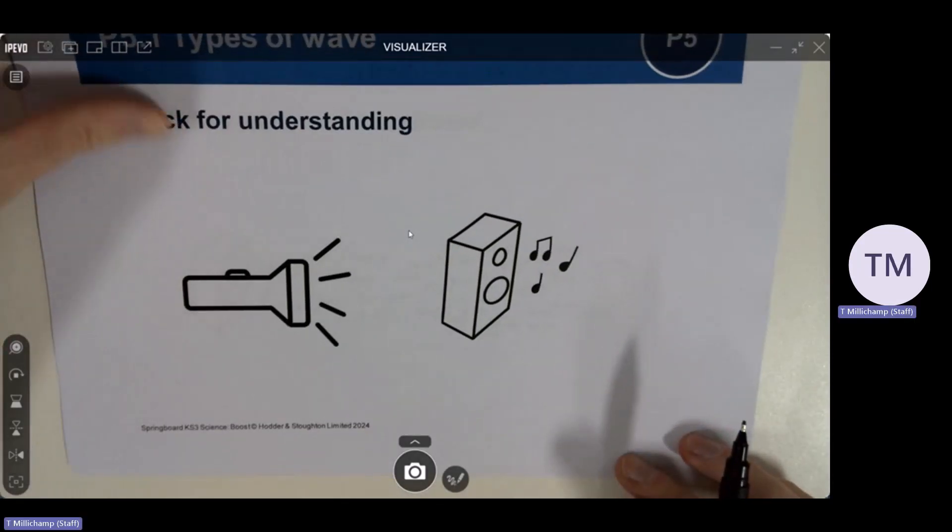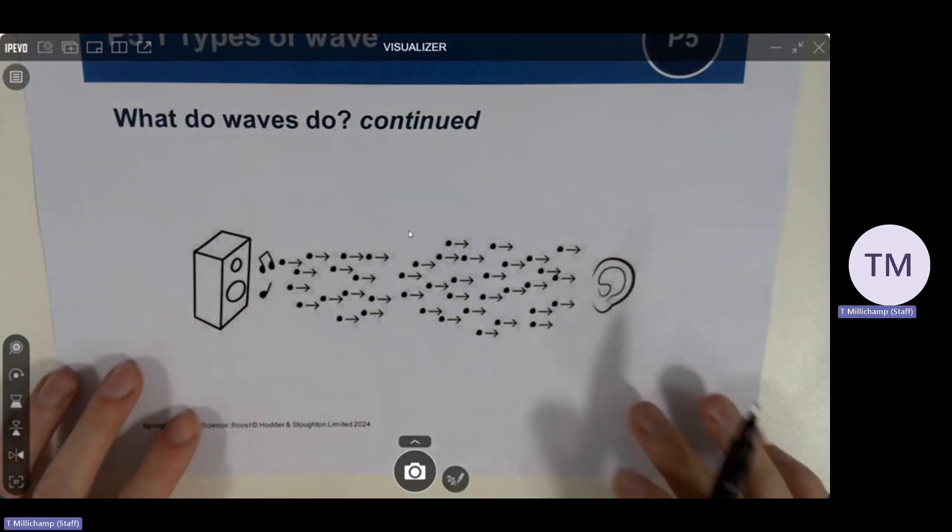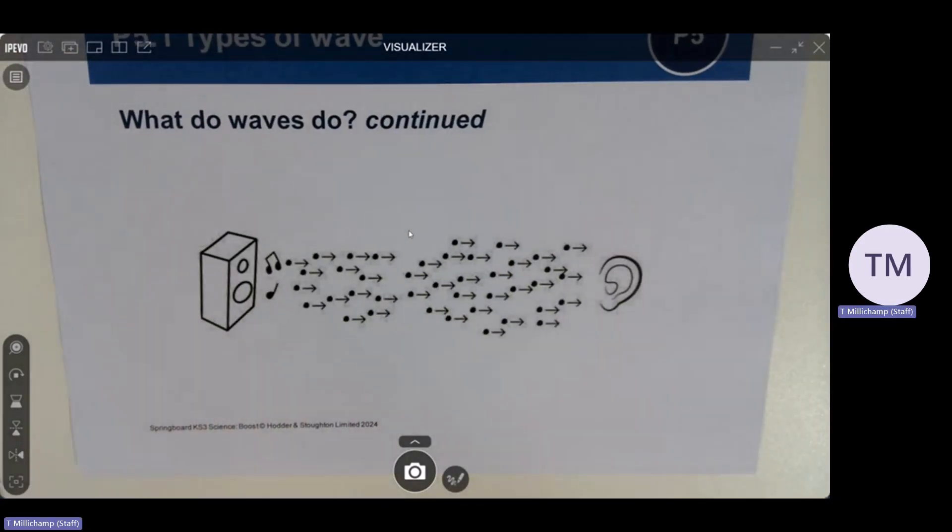From here if I was happy that they understood that I would then move on to the next part of explanation. You can see this is an example of a slide that has a pre-drawn bit of the diagram, and this part of the explanation goes as follows.